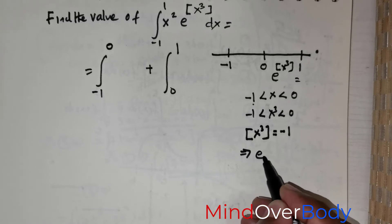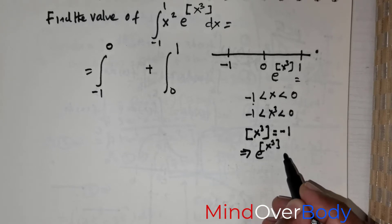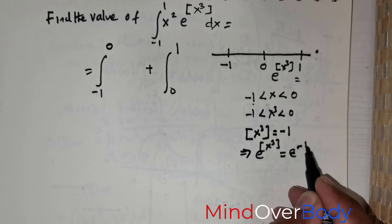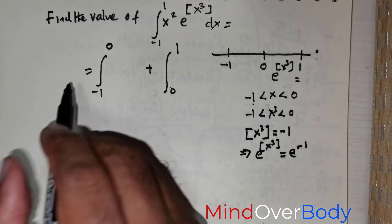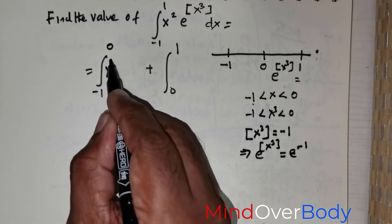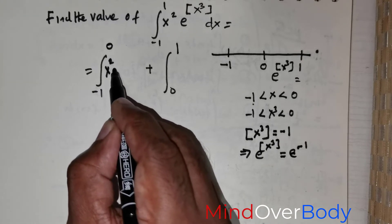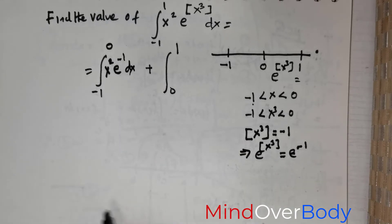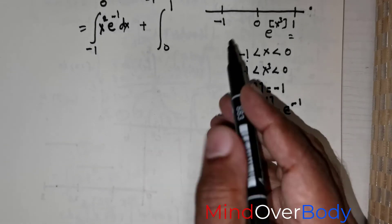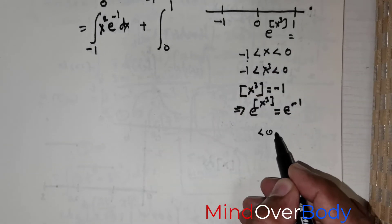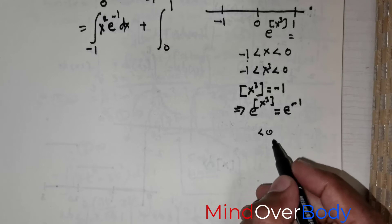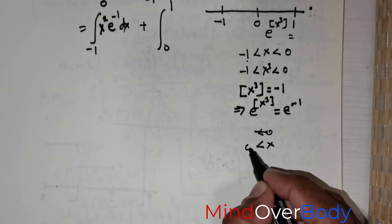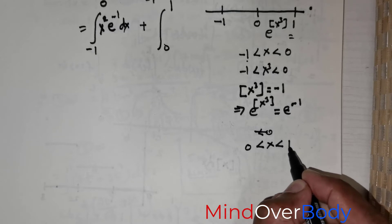This means e raised to the power of the greatest integer of x cubed equals e raised to the power of negative 1. So the integrand on this interval becomes x squared times e raised to the power of negative 1, dx. Moving to the next interval from 0 to 1, x lies between 0 and 1.